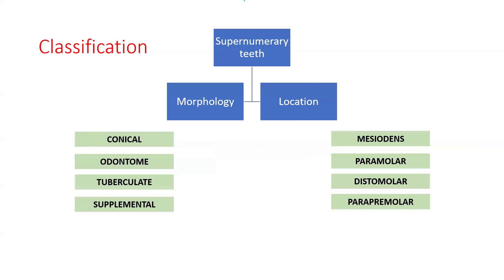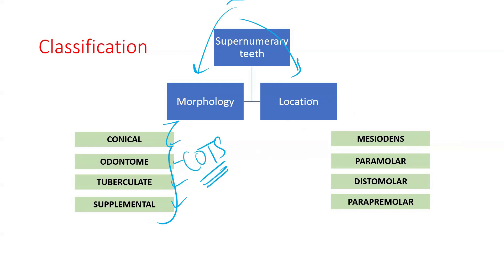Coming to classification, it can be classified based on morphology and location. Based on morphology, it is classified as conical, odontoma, tuberculate, and supplemental — remembered using the mnemonic COTS. Based on location, it is classified as MPDR: mesiodense, paramolar, distomolar, and parapremolar.